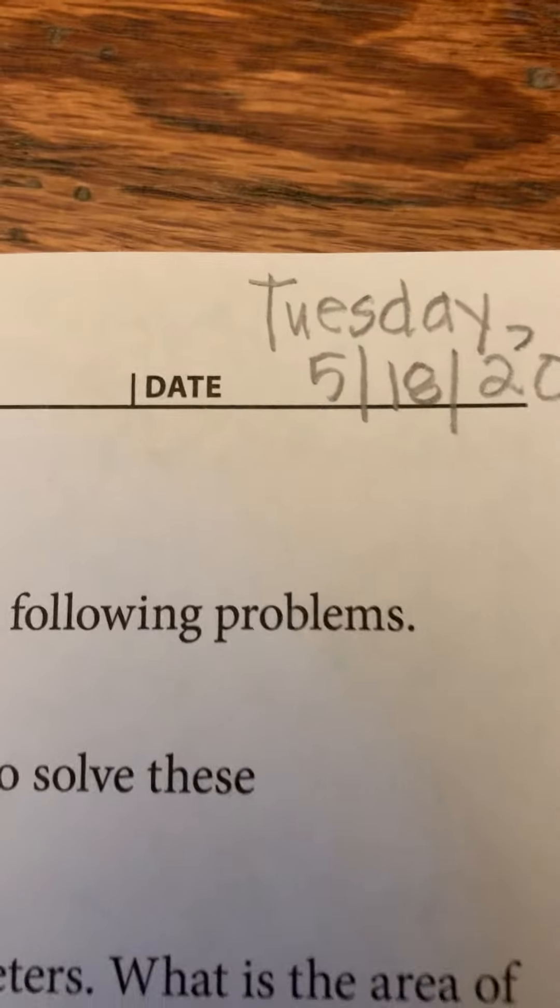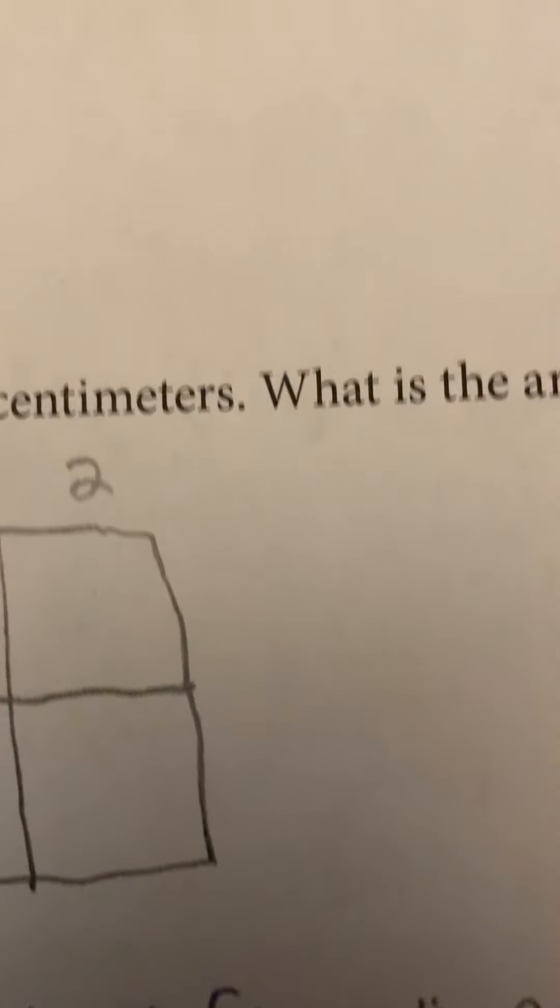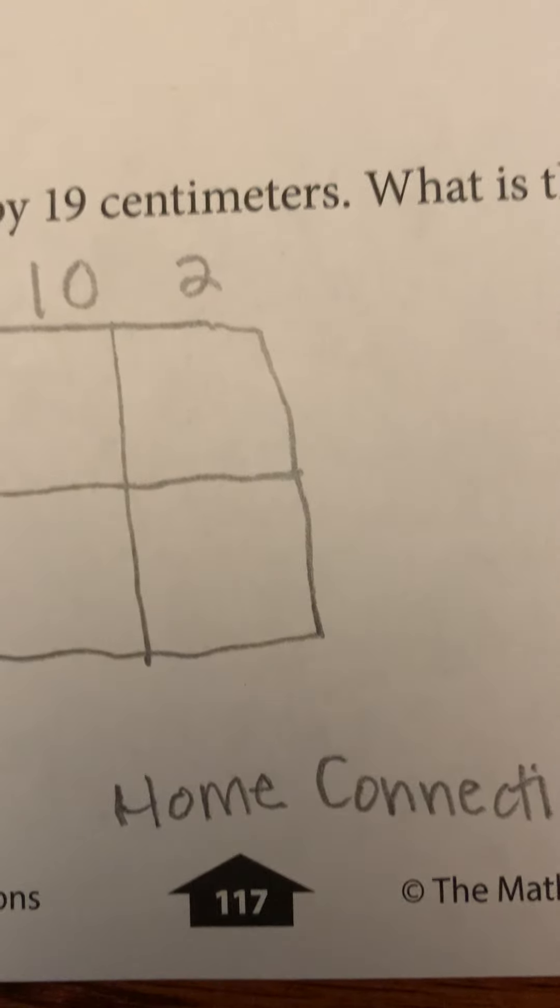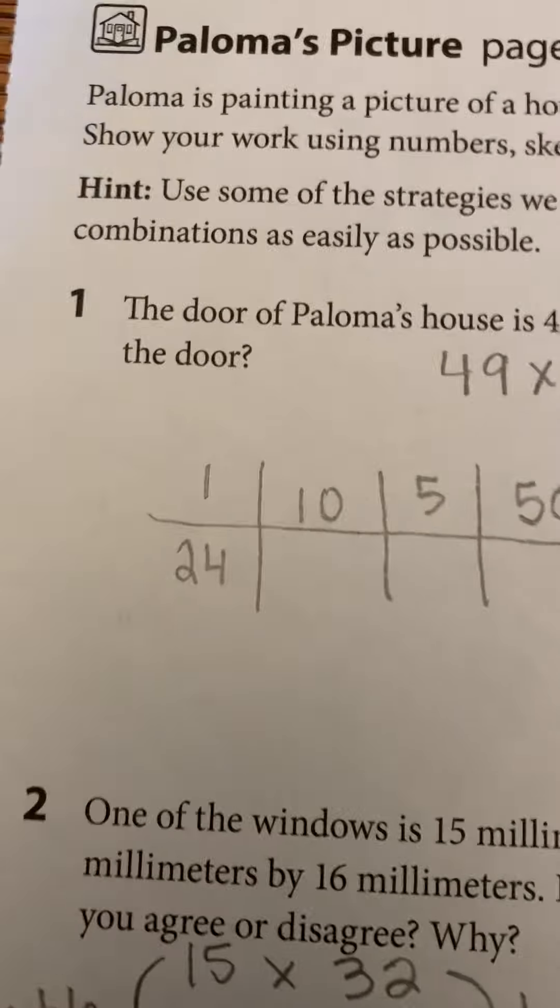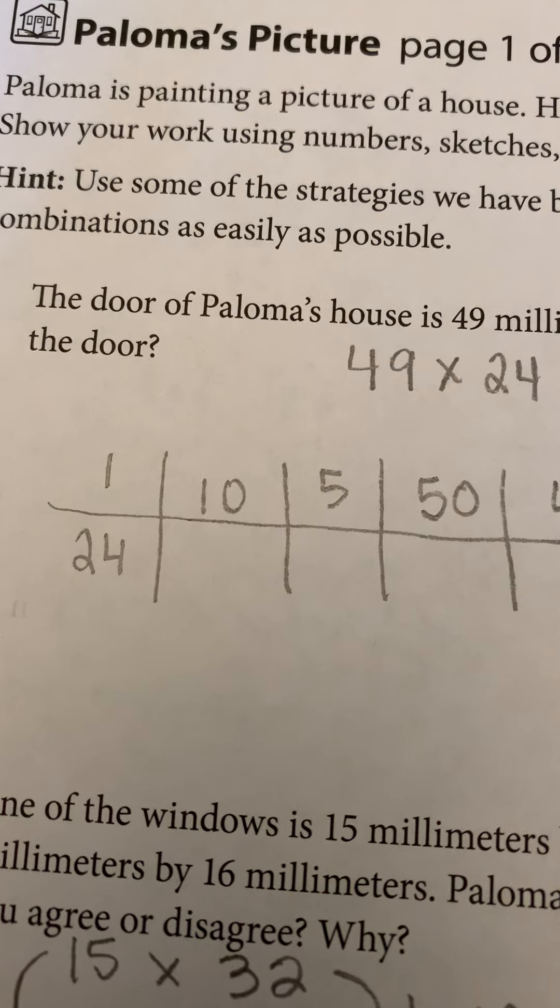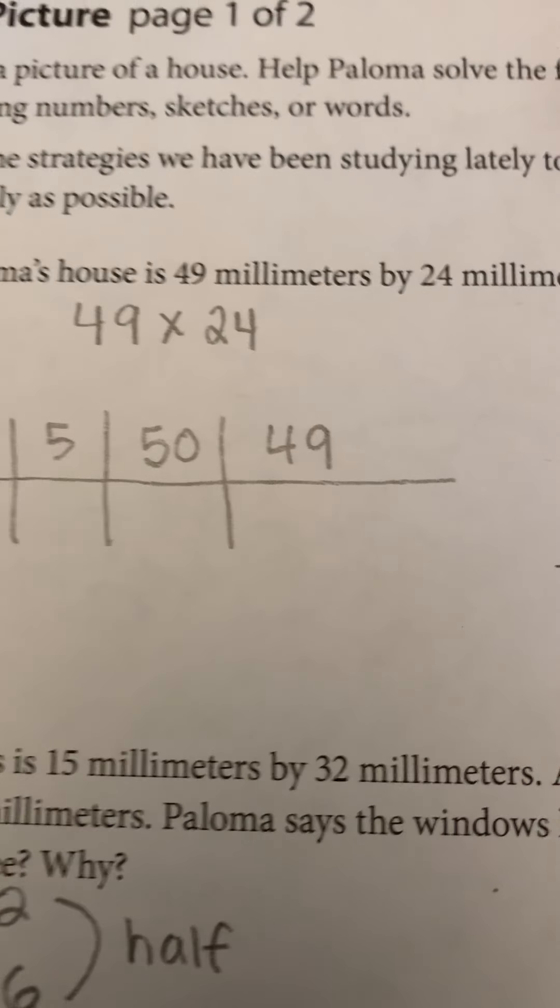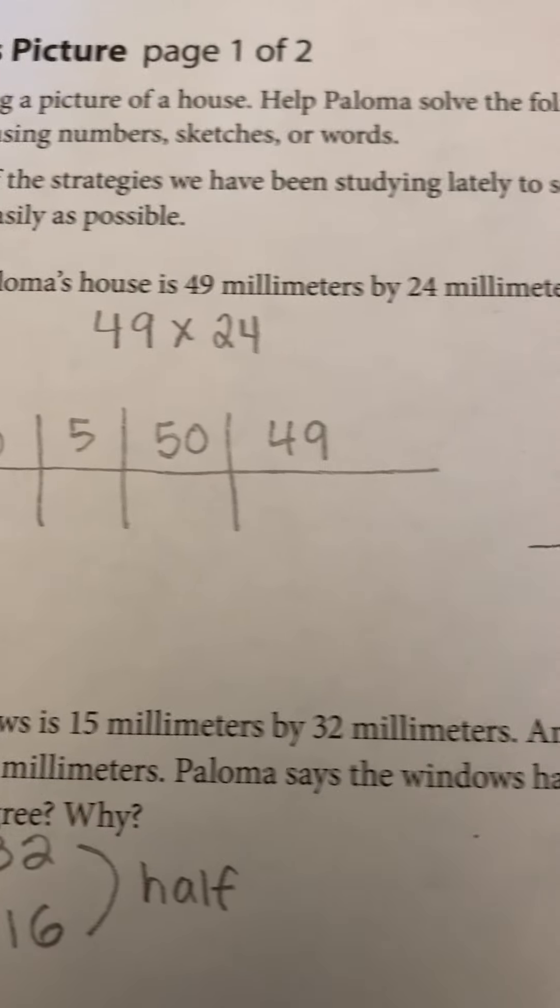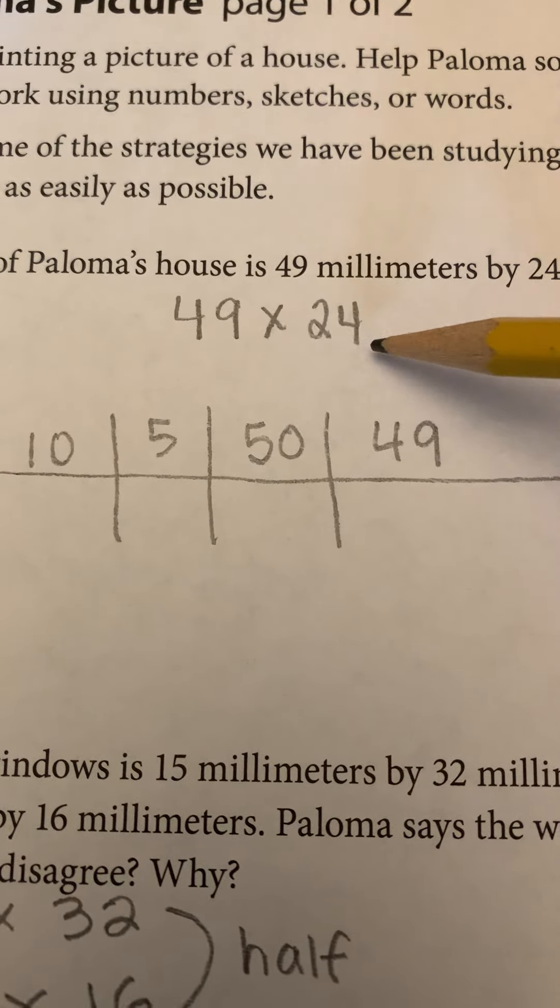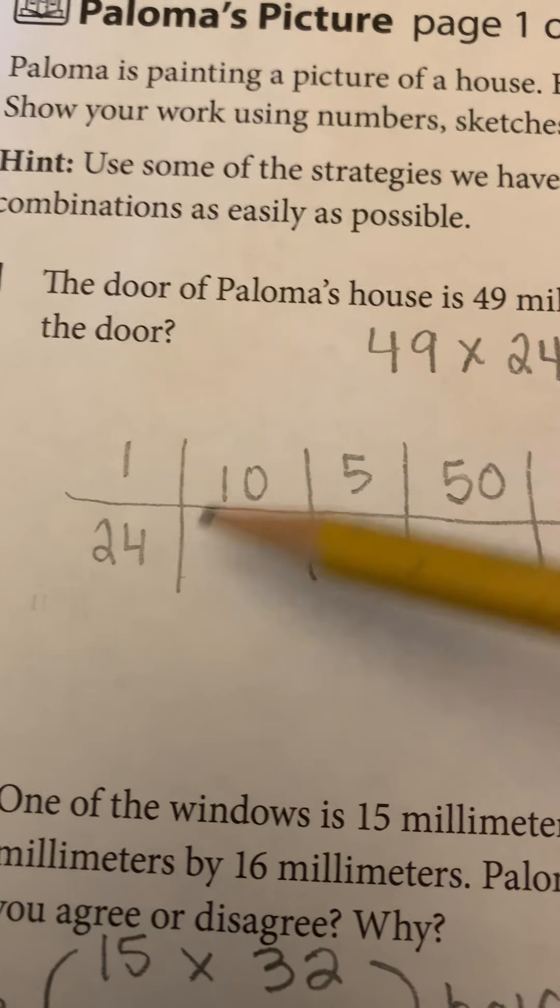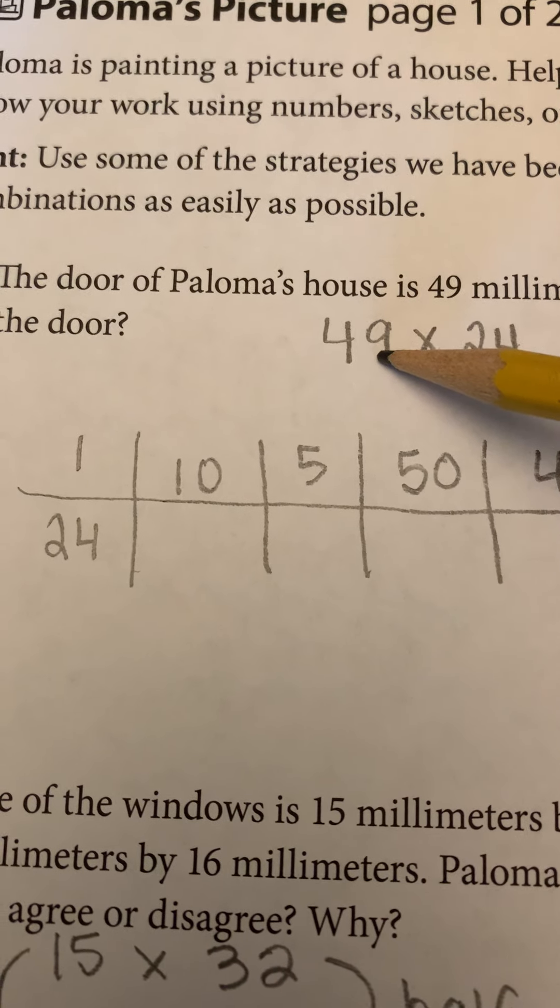Your assignment today is Home Connection page 117 and 118. There are three problems on the front and a few problems on the back. The first one, we're solving for a house door and they want to know what is the area, 49 times 24. I'm going to count by 24s and I'm going to get to 49. How am I going to get to 49?